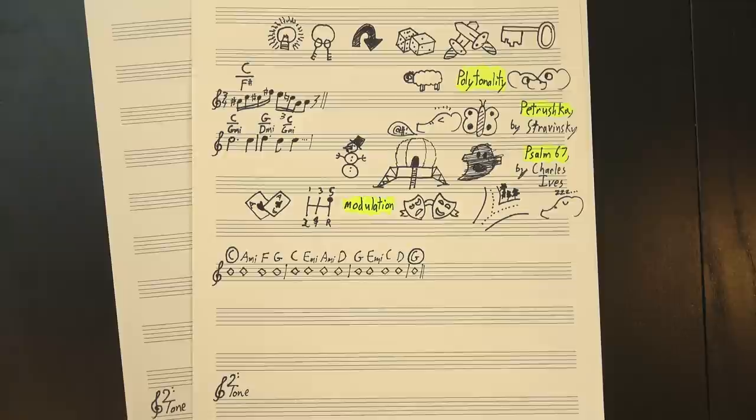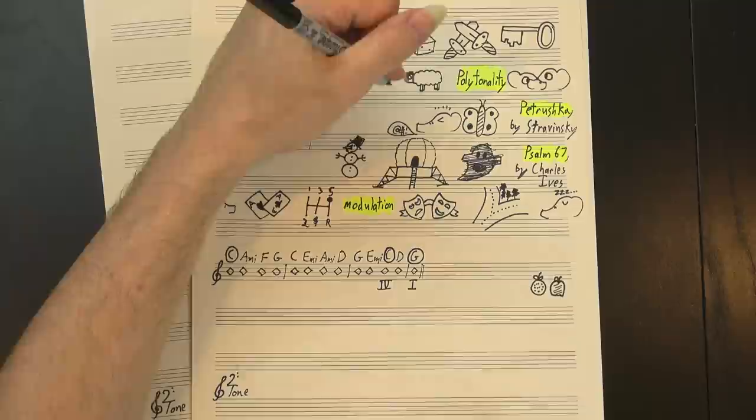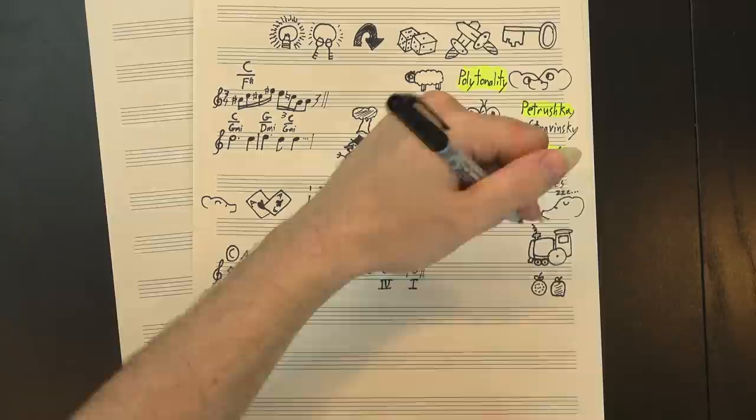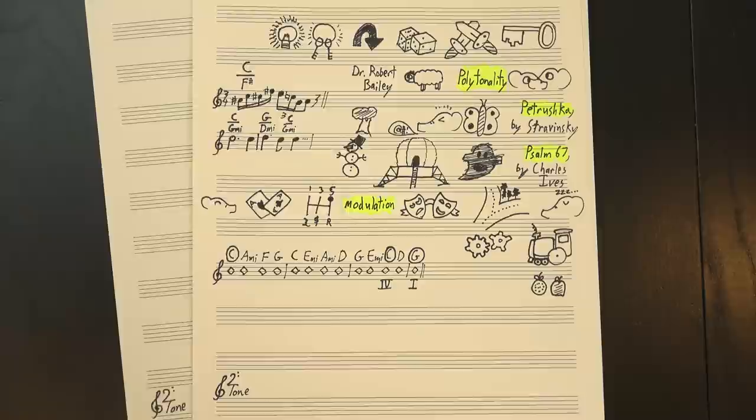But it's still not the same thing. Once we resolve to G, we've left C. It doesn't feel like our root anymore. We're in two different keys, but not at the same time. No, what Hallelujah does is a little more complicated than that. In my opinion, Hallelujah uses what Dr. Robert Bailey calls a double tonic complex.